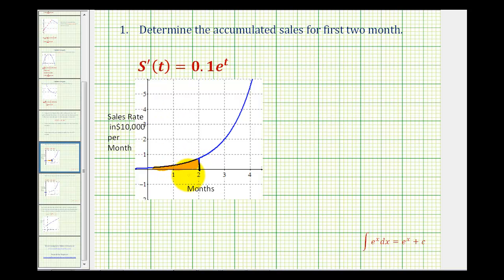So we want to determine the area of this region here under the function. To better illustrate why this area would give us the accumulated sales, we could represent a piece of this area using a rectangle, as we see here. And for the area of this rectangle, we would multiply the width, which is the time in months, times the height, which is the sales rate, in ten thousands of dollars per month. So multiplying the time in months times the sales rate would give us the accumulated sales over that interval of time.